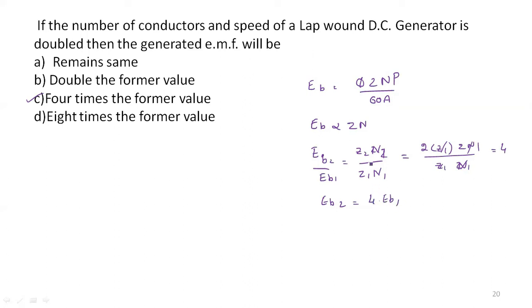So the EMF has changed to 4 times the original value. Eb is directly proportional to Z and N, and since both are doubled, Eb becomes 4 times. Next problem.